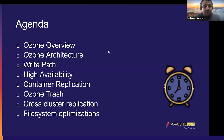Before we get into the talk, I would like to discuss the agenda. We would start with an overview and architecture of Apache Ozone, where folks who are new to Ozone will get an understanding of how the components interact with each other. We would also discuss what happens when a user writes a key into Ozone — that is the write path of Ozone.